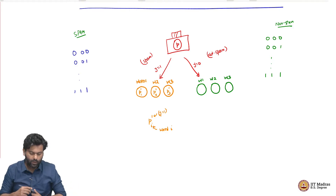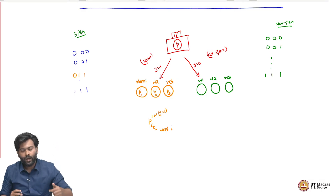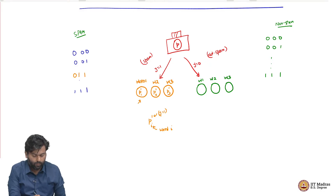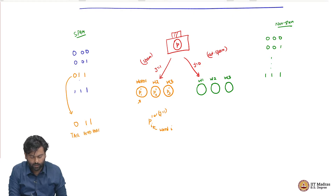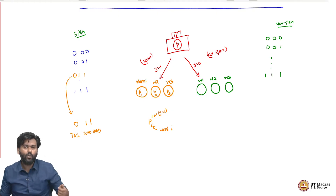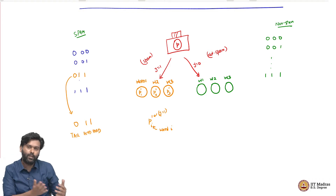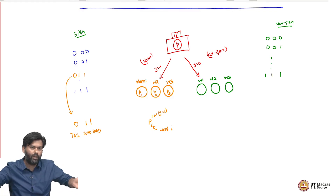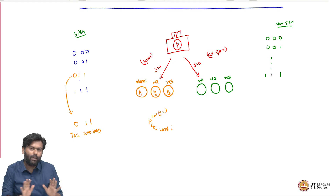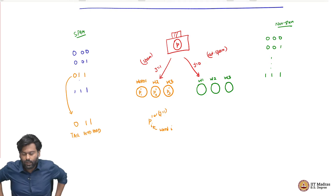For example, in this world, if I had to generate an email like 011, then what should have happened is that the first coin should have fallen tail, the second coin should have fallen head, and the third coin should have fallen head. There are three coins, one for each word. The word 1 coin should have fallen tails so that word is not in my email. Word 2 and word 3 would have fallen heads so those words are in my email. Each word has a different probability of occurring and each word is independently generated of the other words in the spam side of things.